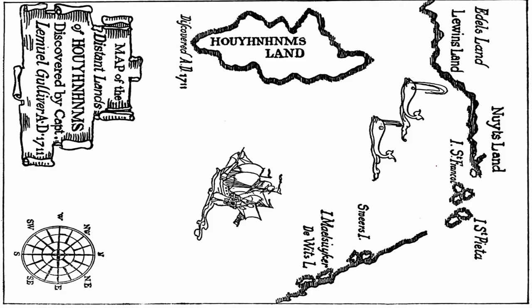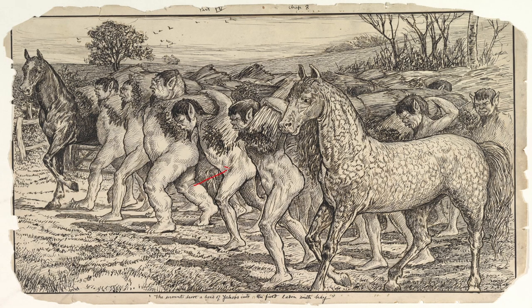Now captain of his own ship bound for Barbados and the Leeward Islands, several crew members become ill and die. Gulliver hires replacement sailors in Barbados who turn out to be pirates and convince the other crew members to mutiny. As a result, Gulliver is deposited on an island to fend for himself. Almost immediately, he is discovered by a herd of ugly, despicable human-like creatures called Yahoos, who attack him by climbing trees and defecating on him. He is saved by the appearance of a horse — a Houyhnhnm.